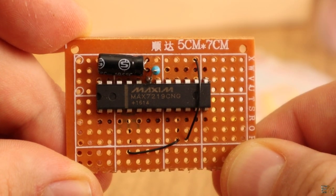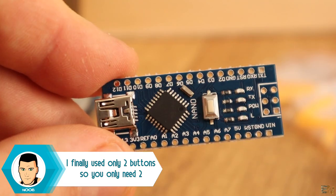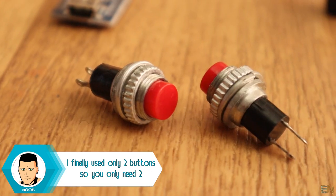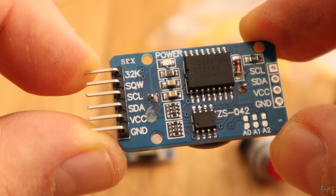To control the LEDs, we need the MAX7219 Matrix controller, an Arduino Nano, 3 push buttons in order to set the time and the real time clock module in order to know the real time.